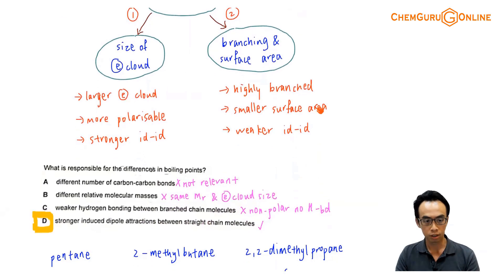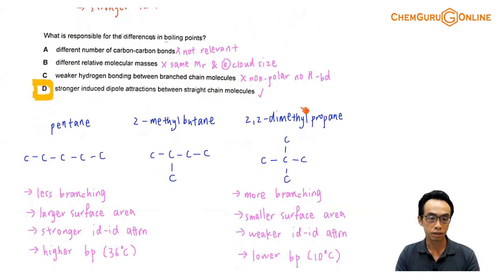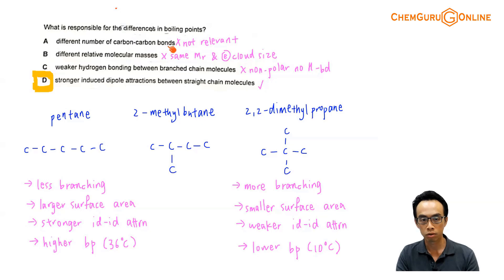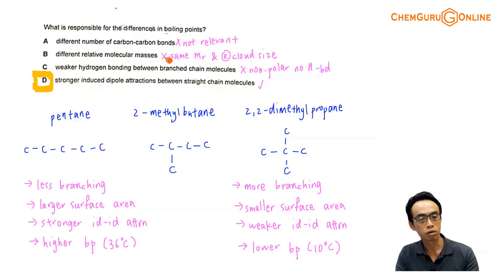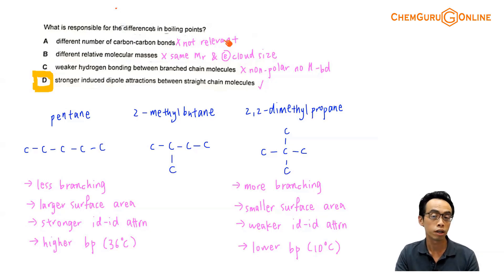Let us consider the four options. Option A: different number of carbon-carbon bonds. This is not relevant — the number of carbon-carbon bonds is not important for explaining physical properties involving boiling point. So A is not relevant at all.